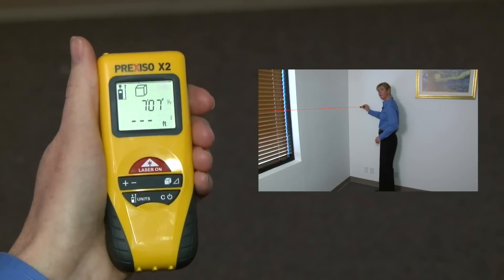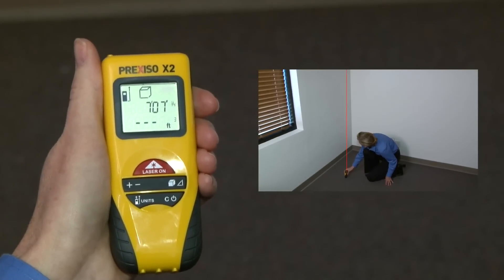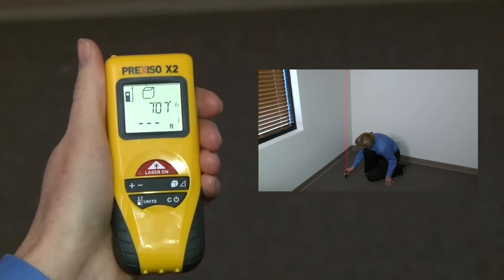Next, you'll see the unit prompting you to take the second measurement, or the height. Again, simply line it up and press and release the red laser button.